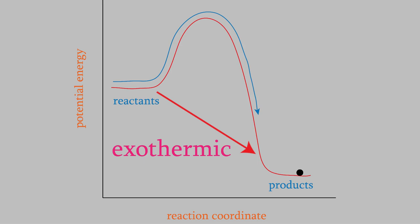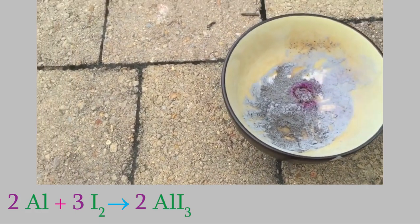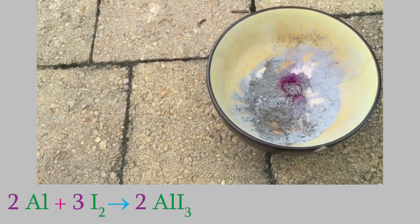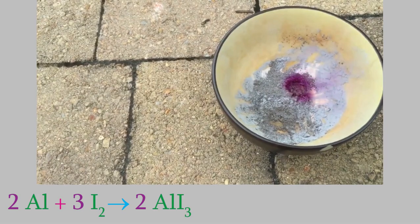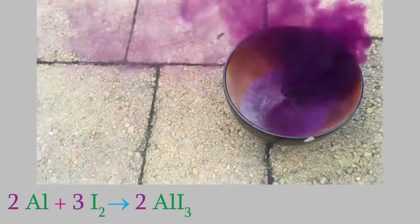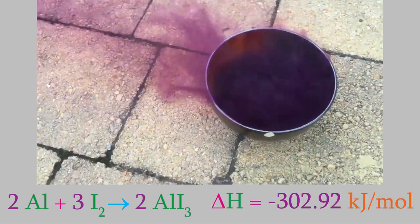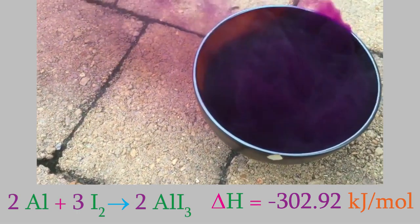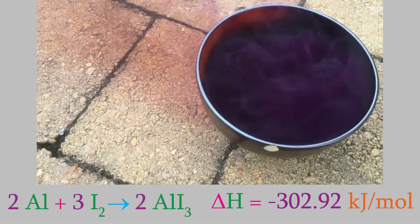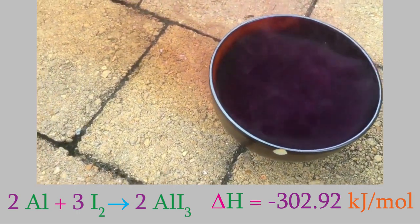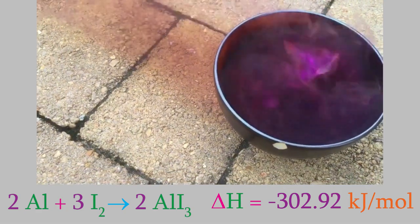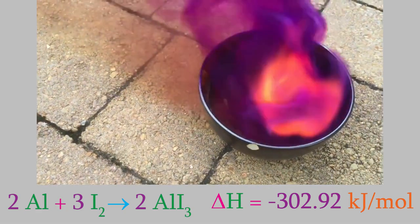For example, here is the reaction between aluminum and iodine to form aluminum iodide. As you can tell, it's a highly exothermic reaction. The reaction has an enthalpy of negative 302.92 kilojoules per mole. As you might guess, the fact that the enthalpy decreases so much is a major reason why this reaction is possible.